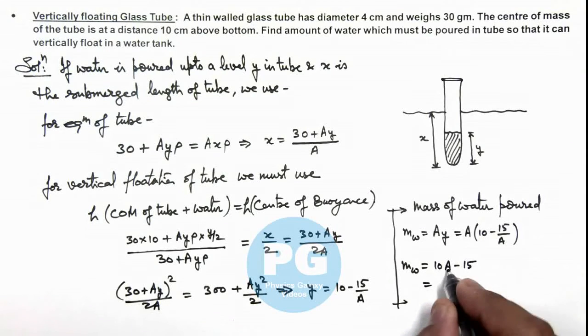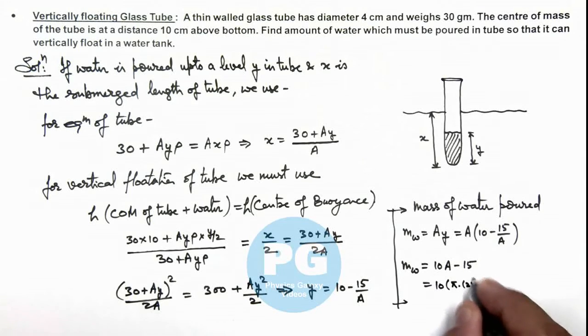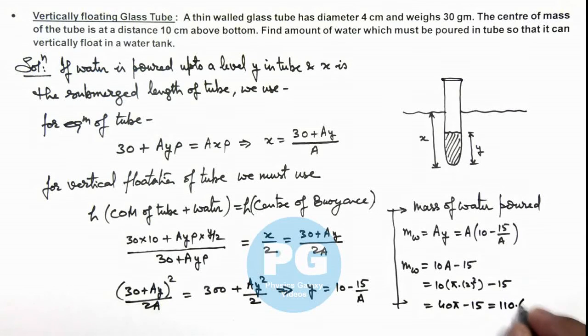And the value of A_y we can use as π r squared and the radius we can take as 2 centimeter. So this will be 10 multiplied by π multiplied by 2 square minus 15. If you numerically solve it this gives us 40π minus 15 which is equal to 110.6 gram. That is the answer for this problem.